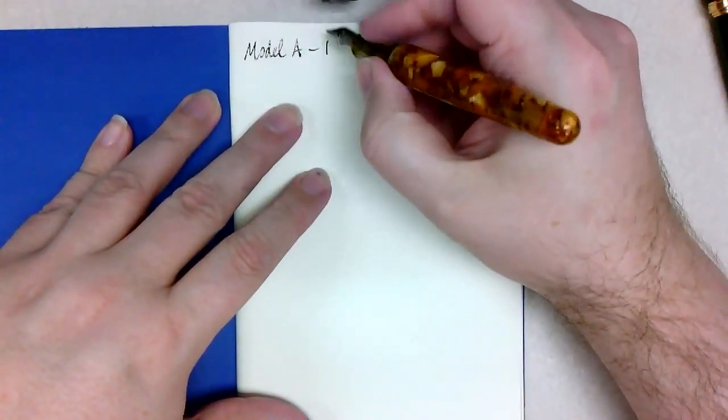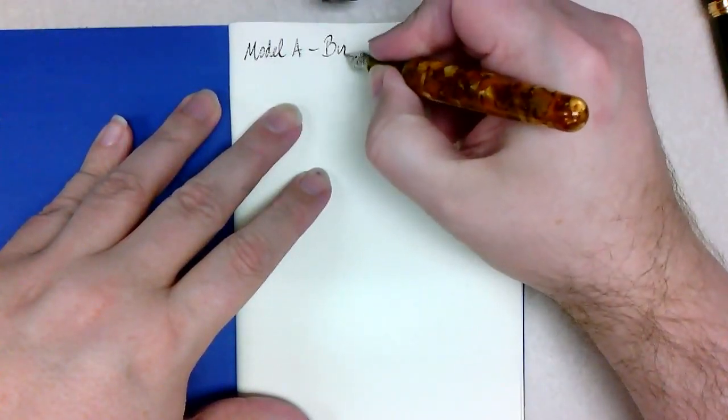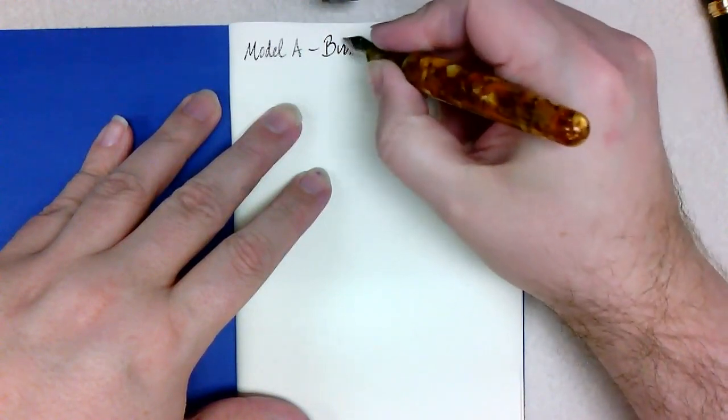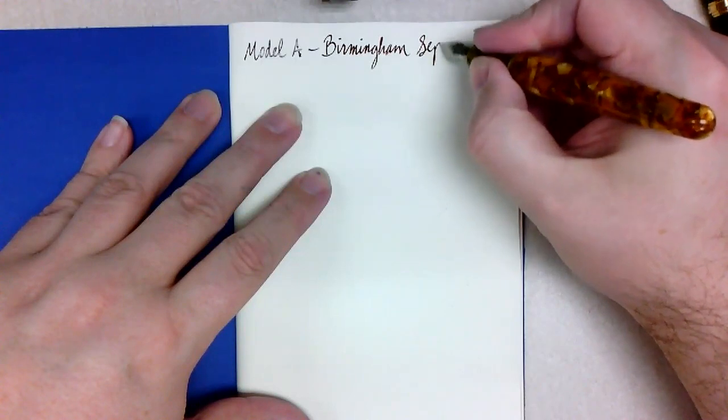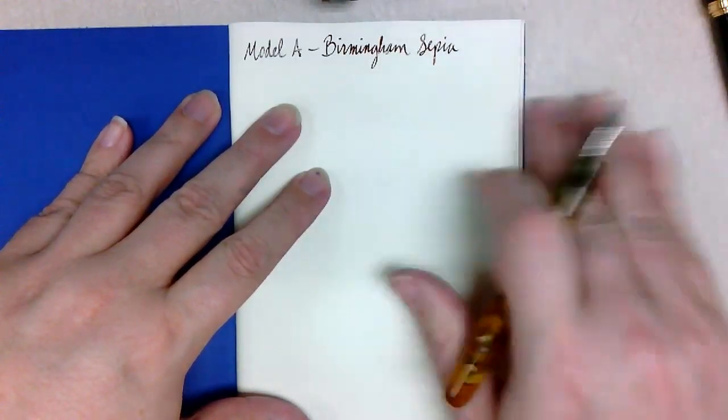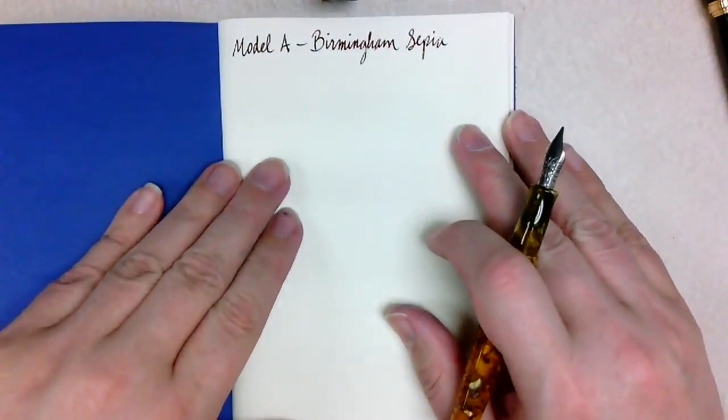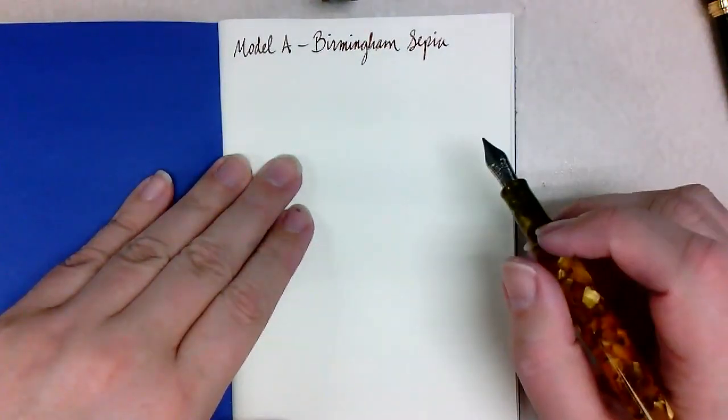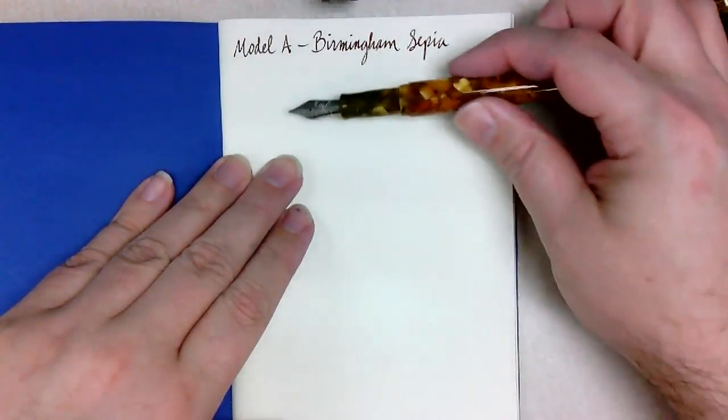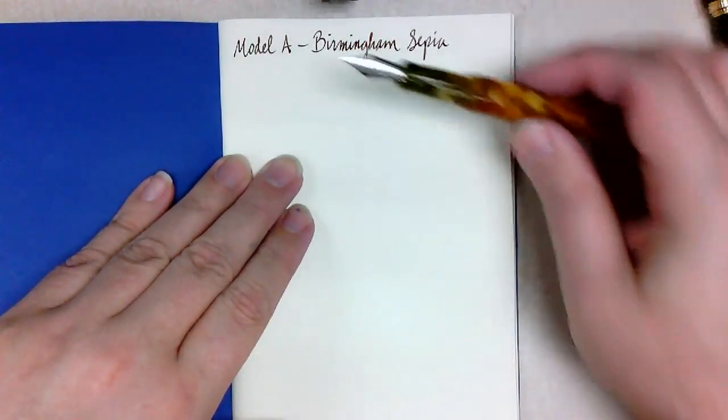I figure we can write with some of these. So this is, I've already forgotten, but I'm going to write down Model A, because that's what it is. And the ink is similar to Birmingham ink, actually. I think I got this. I have a feeling I bought this early enough that maybe he was still sending a bottle of ink with the pen. So I don't think I picked this ink out.